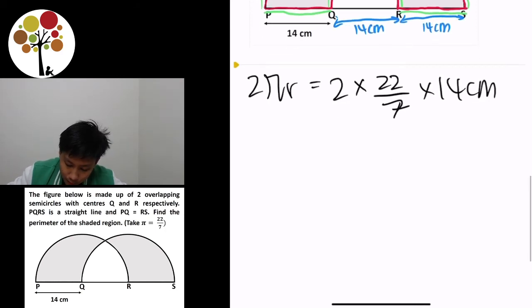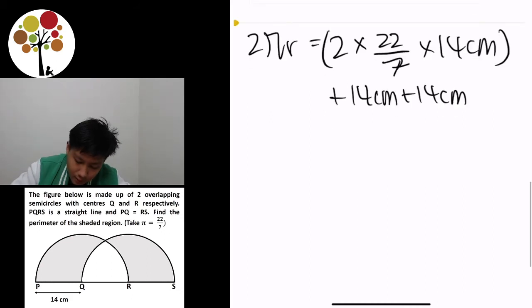And then we have to take this—sorry, it's a little bit—plus 14 cm plus 14 cm, but I'll include that later so that it's less confusing. So, 2 times 22 over 7 times 14 cm.